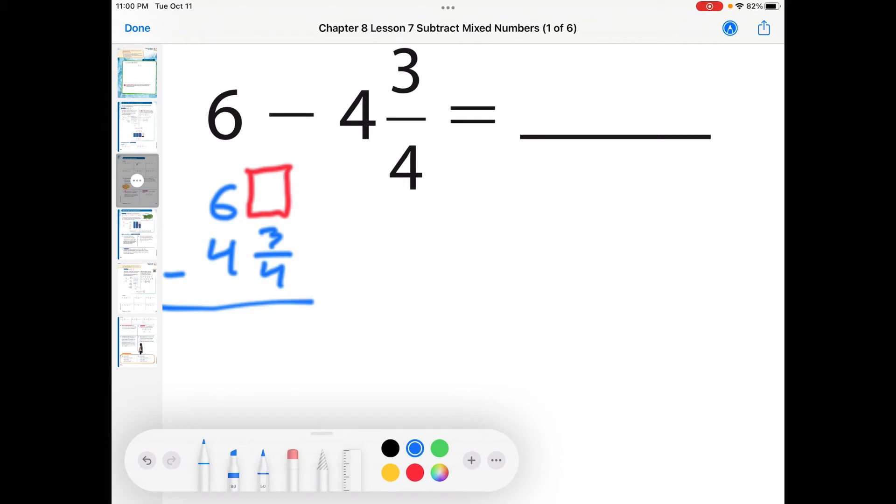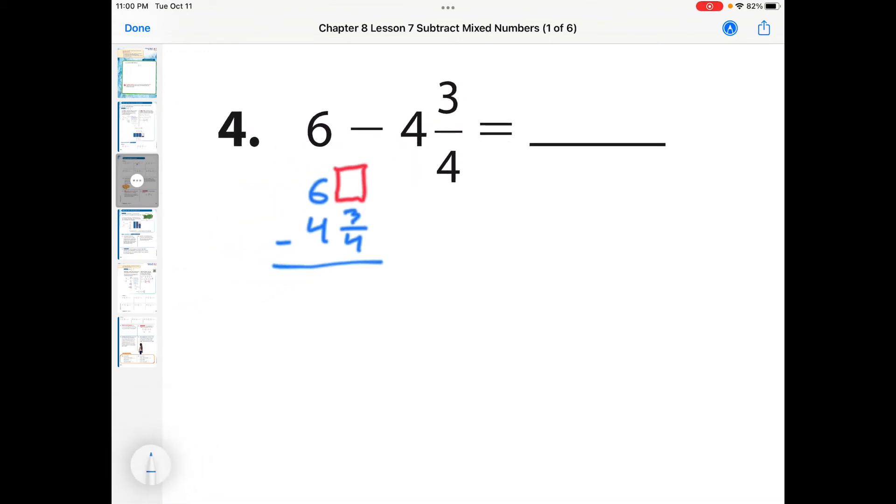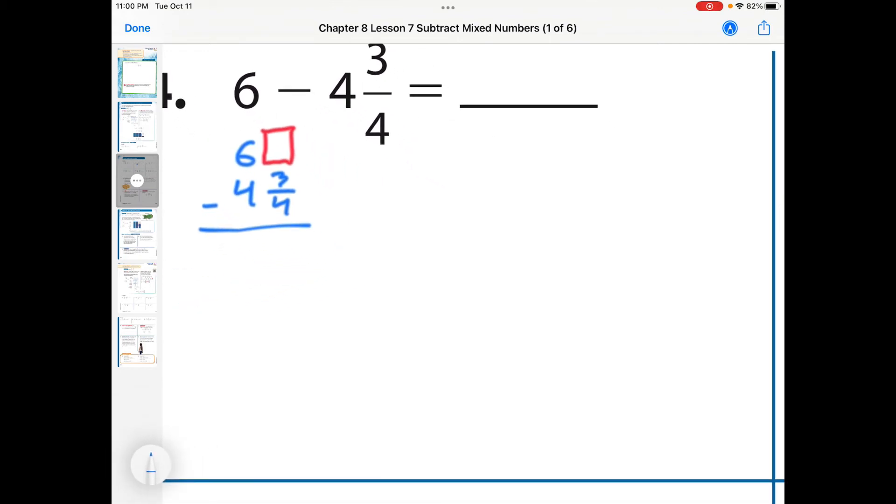And so what we're going to do is we're going to take a moment and we're going to regroup that 6. And we're going to pull a hole out of that 6. So what I'm going to do is I'm going to take a hole out of 6. And we know that 6 minus 1 is 5. So I'm going to come down here and I'm going to go 5. And we know that the denominator is 4. And so we pull the hole out. Because remember, guys, 4 divided by 4... all fractions are division. 4 divided by 4 is really 1.